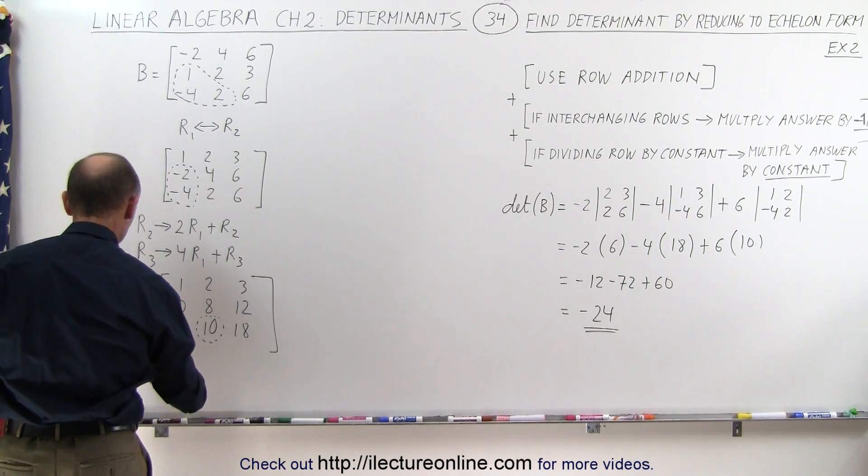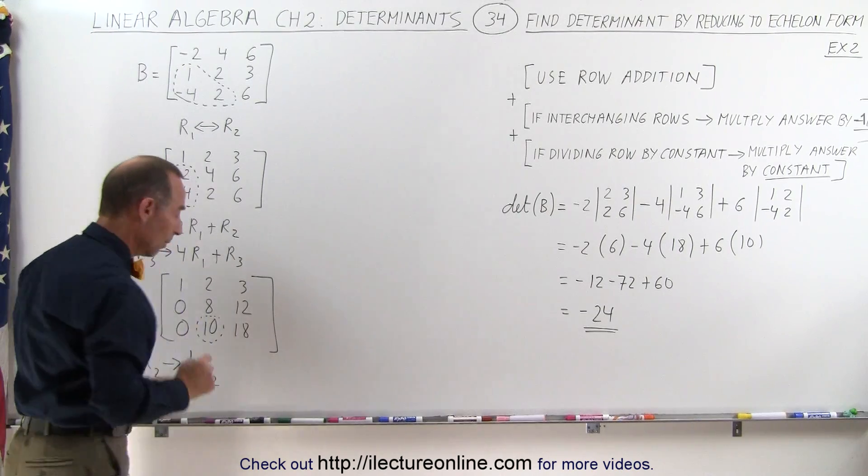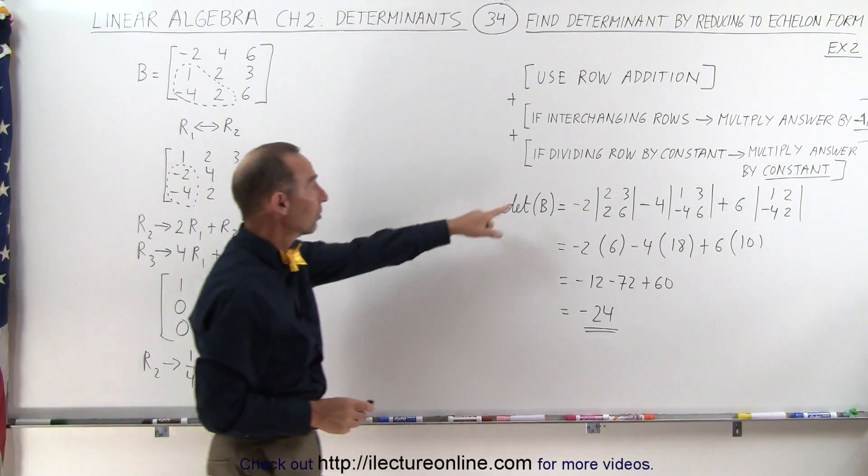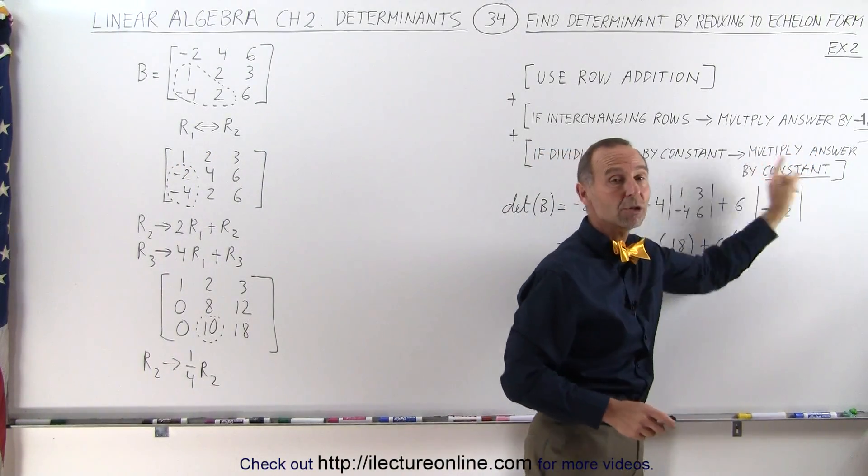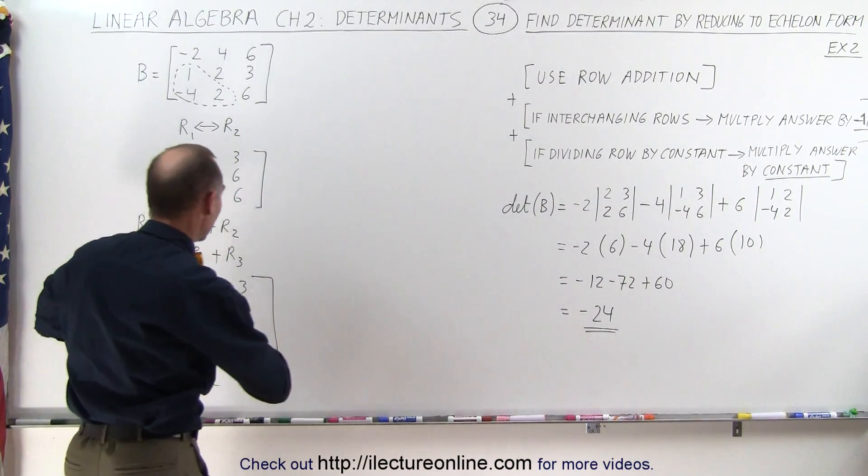So what we're going to do is take row 2 and replace it by 1/4th row 2. Remember, again, when we divide a row by a number, like a constant right here, that means our answer at the end will have to be multiplied by that constant. So let's do that and see what we get.